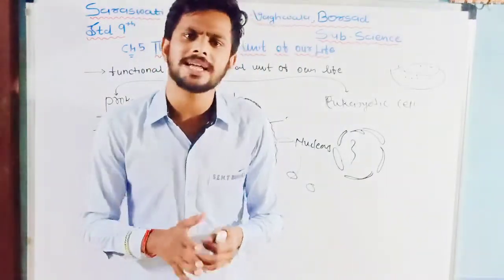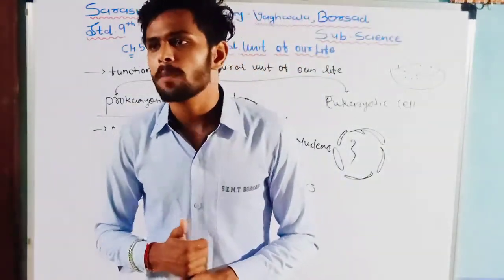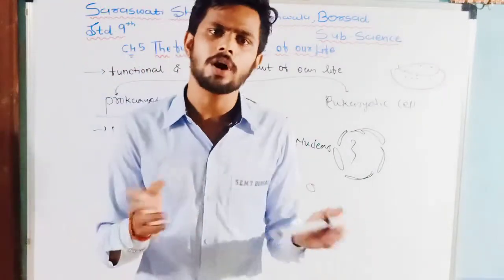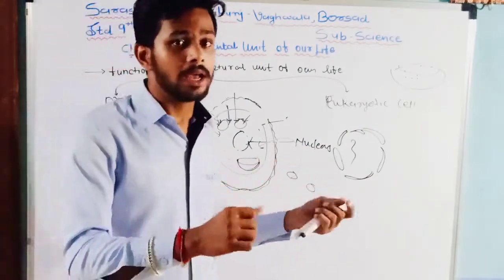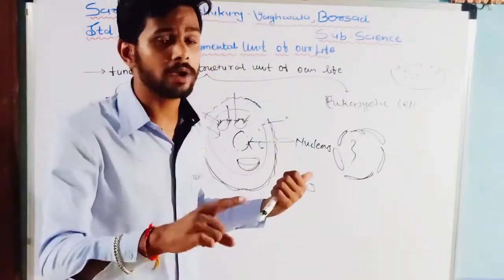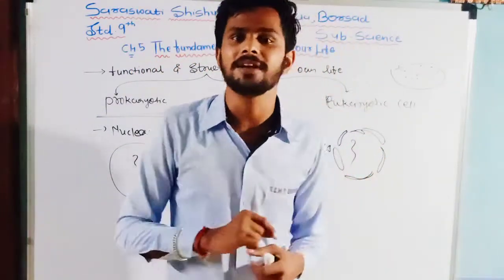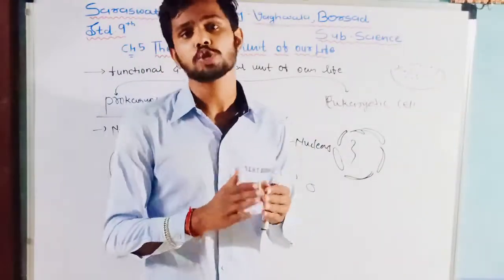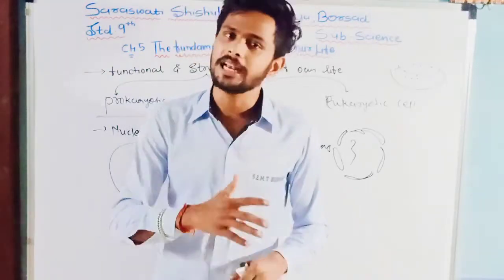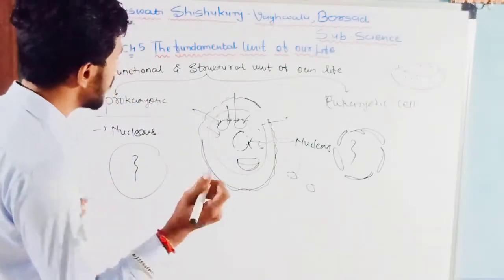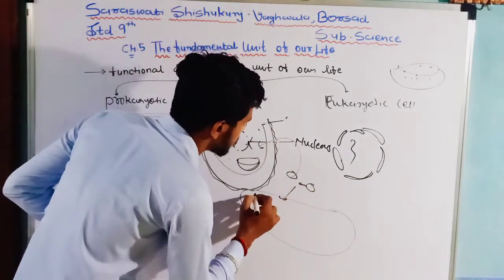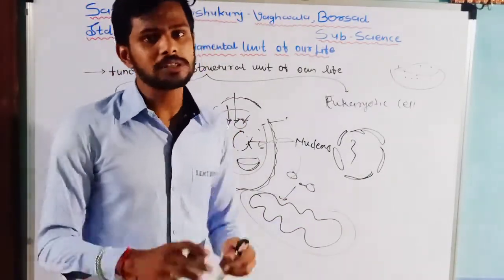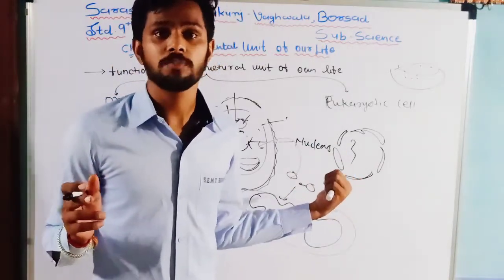Next we talked about mitochondria, known as the powerhouse of the cell. The cell needs energy to perform chemical activities such as manufacturing, packaging, and transportation. That energy, needed for biochemical activity, is provided to the cell in the form of ATP — adenosine triphosphate — by mitochondria. Mitochondria have a double membrane structure: the outer membrane is porous while the inner membrane is deeply folded inside. Mitochondria have their own ribosomes and can produce their own DNA.